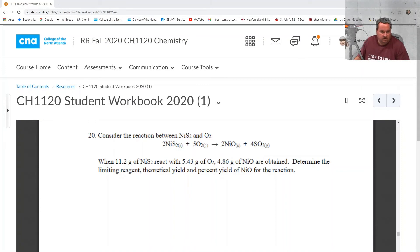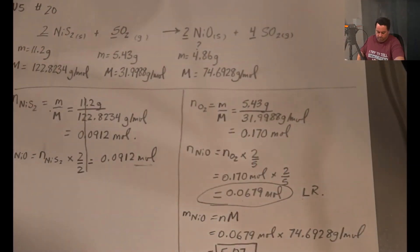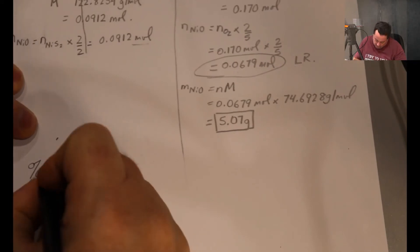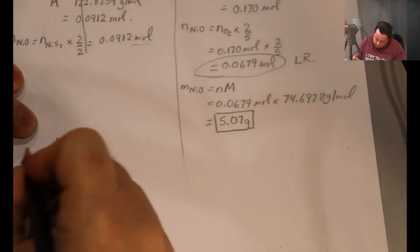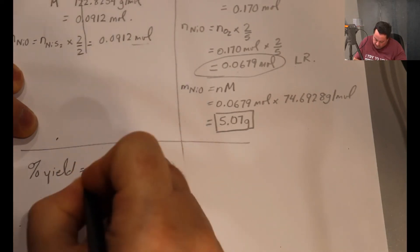The theoretical yield, which we did, and now we just need to do the percent yield for the reaction. So the theoretical yield is 5.07 grams and we know that we actually only get 4.86 grams. So one more step: percent yield.